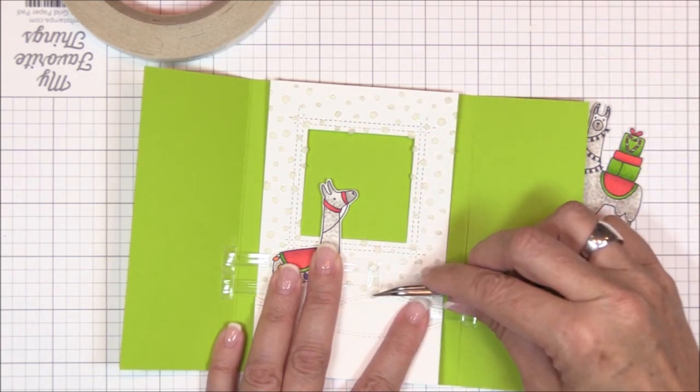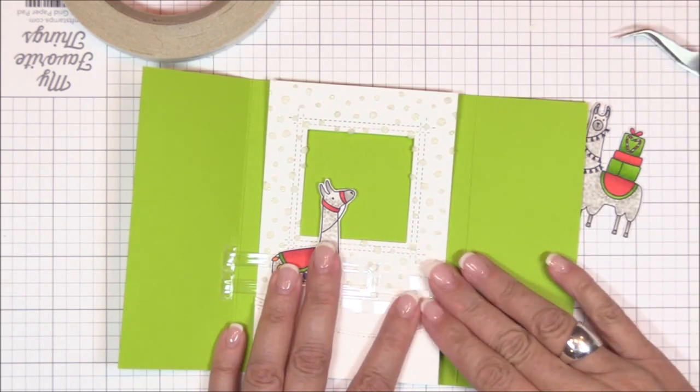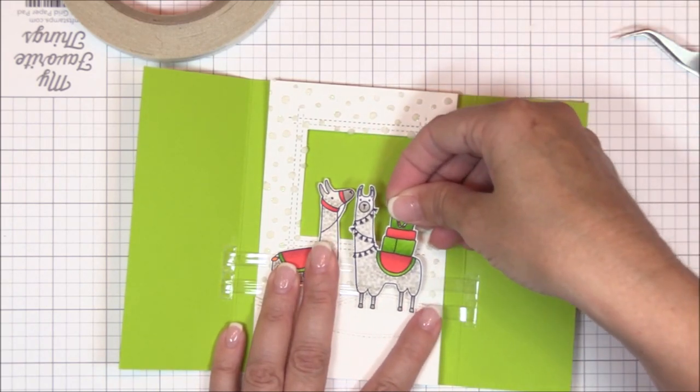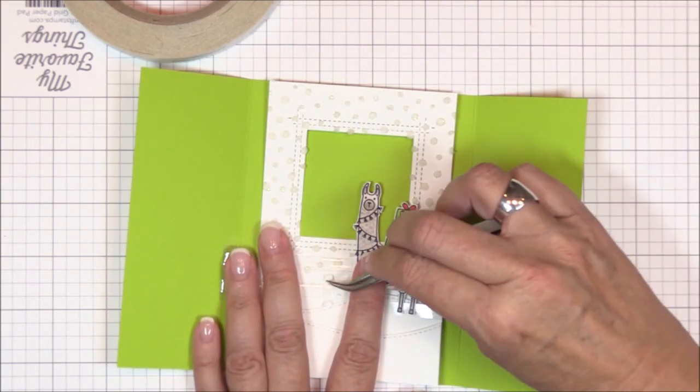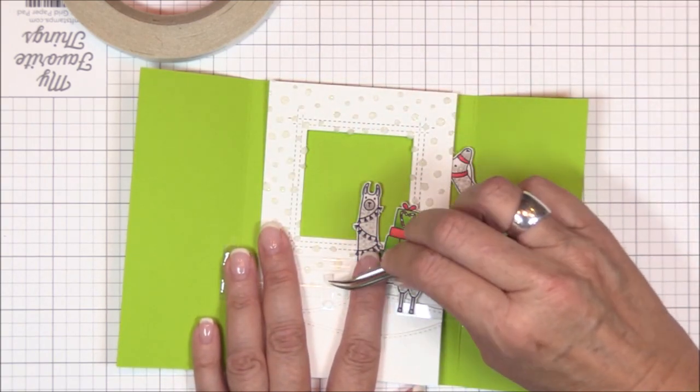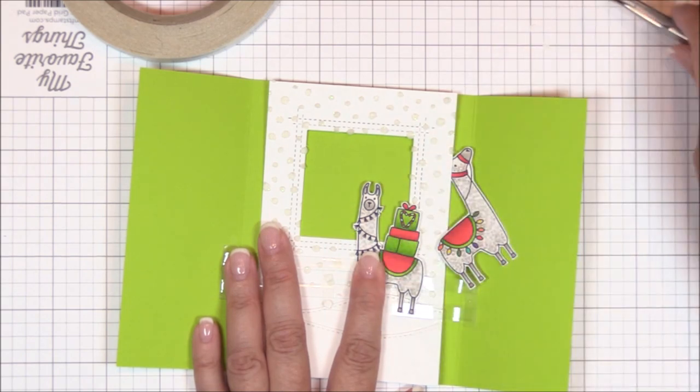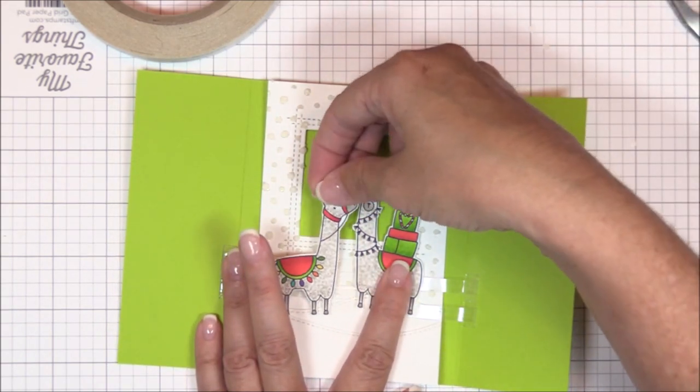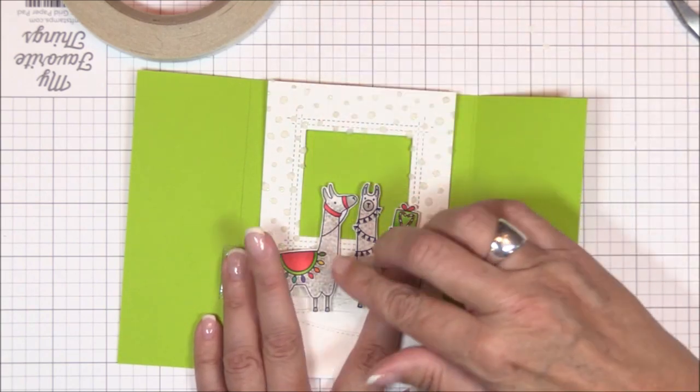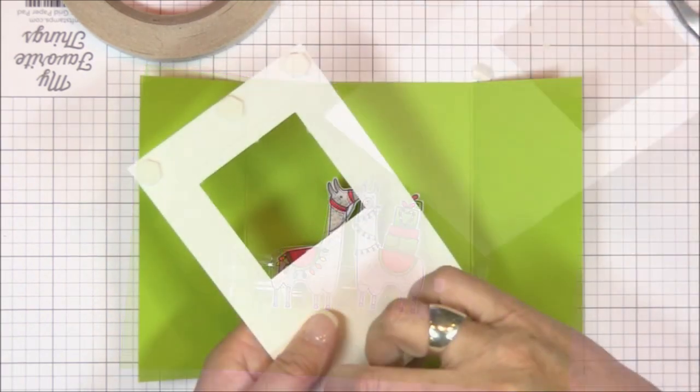Now that I have llamas in position, I can remove the liner paper from the bits of foam square that I adhere to the end of the left tab with my tweezers. And then I can adhere the right llama to it. I do the same thing with the left llama. Peel away the liner paper from the bits of foam square at the end of the right tab with my tweezers and adhere the left llama to the tabs. See how easy it is?